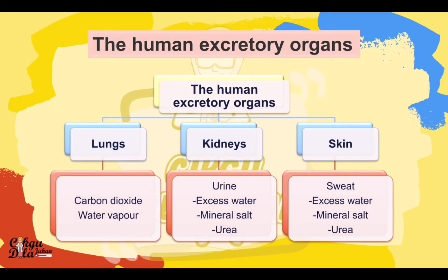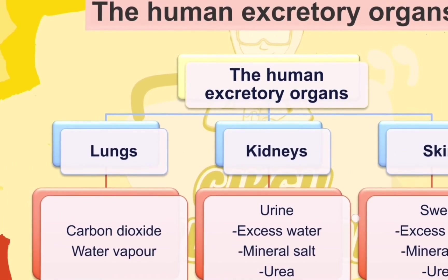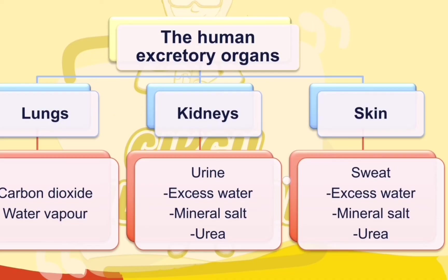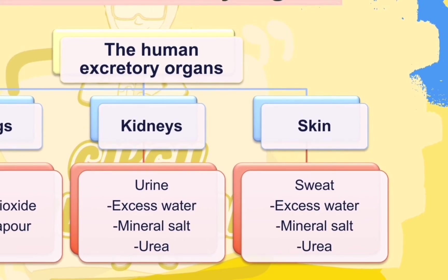Human excretory organs can be divided into three: lungs, which produce carbon dioxide and water vapor; kidneys, which produce urine containing excess water, mineral salt, and urea; and skin, which produces sweat containing excess water, mineral salt, and urea.